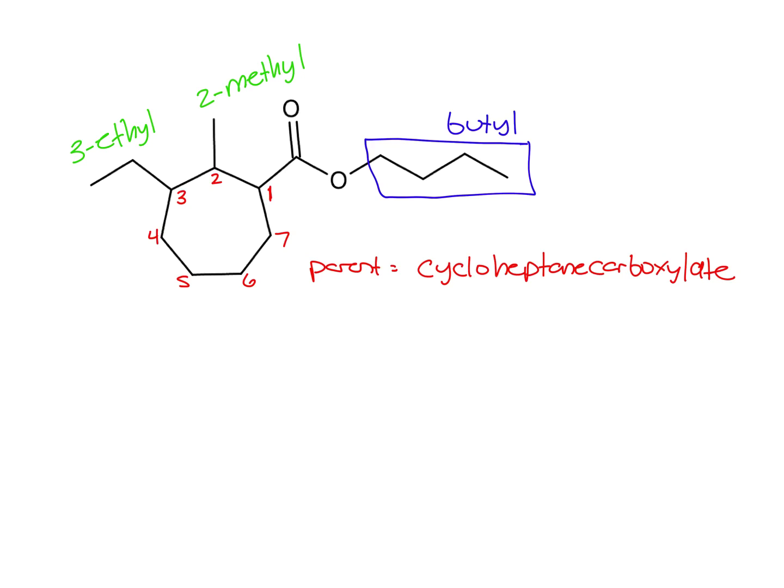Okay, so always start your name with the ester R group. That's butyl. Leave a space. Now we'll write our substituents alphabetically. 3-ethyl, 2-methyl, and then our parent cycloheptane carboxylate.